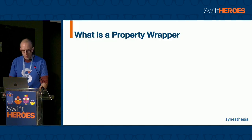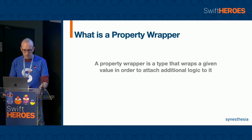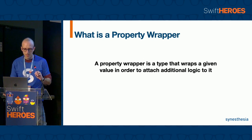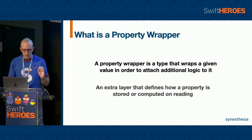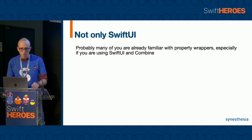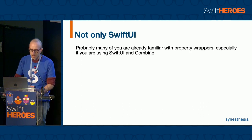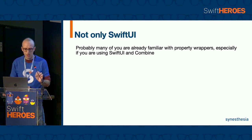The property wrappers. We can start with a definition. A property wrapper is a type that wraps a given value in order to attach additional logic to it. You can see it as an extra layer that defines how a property is stored or computed on reading. Many of you are already familiar with property wrappers, especially if you are using SwiftUI and Combine.